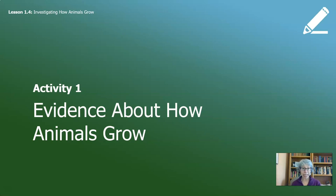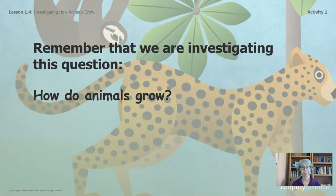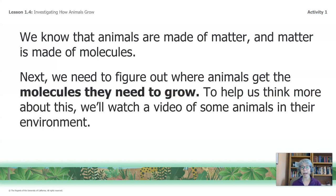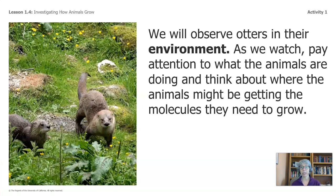This video has three activities. The first activity, we will be looking at the evidence on how animals grow. The question we're investigating is: how do animals grow? We know that animals are made of matter and matter is made of molecules. Next, we need to figure out where animals get the molecules they need to grow. To help us think more about this, we'll watch a video of otters in their environment. Even though otters do not live in the Costa Rican rainforest, we will observe their actions and apply what we've learned to the animals we are studying. As we watch, pay attention to what the animals are doing and think about where they might be getting the molecules they need to grow.